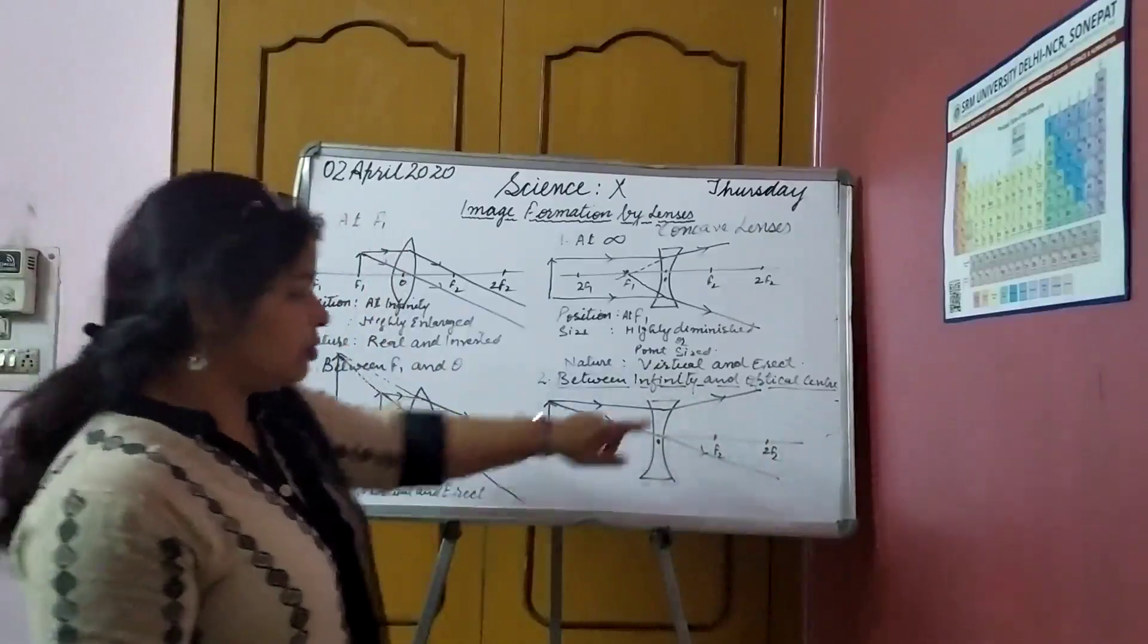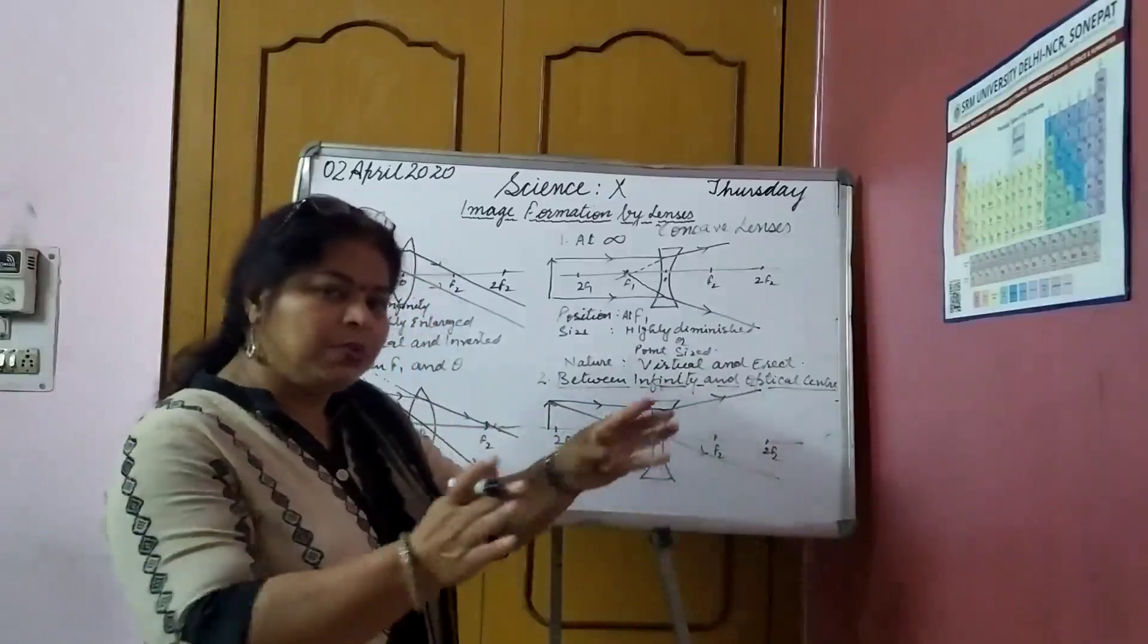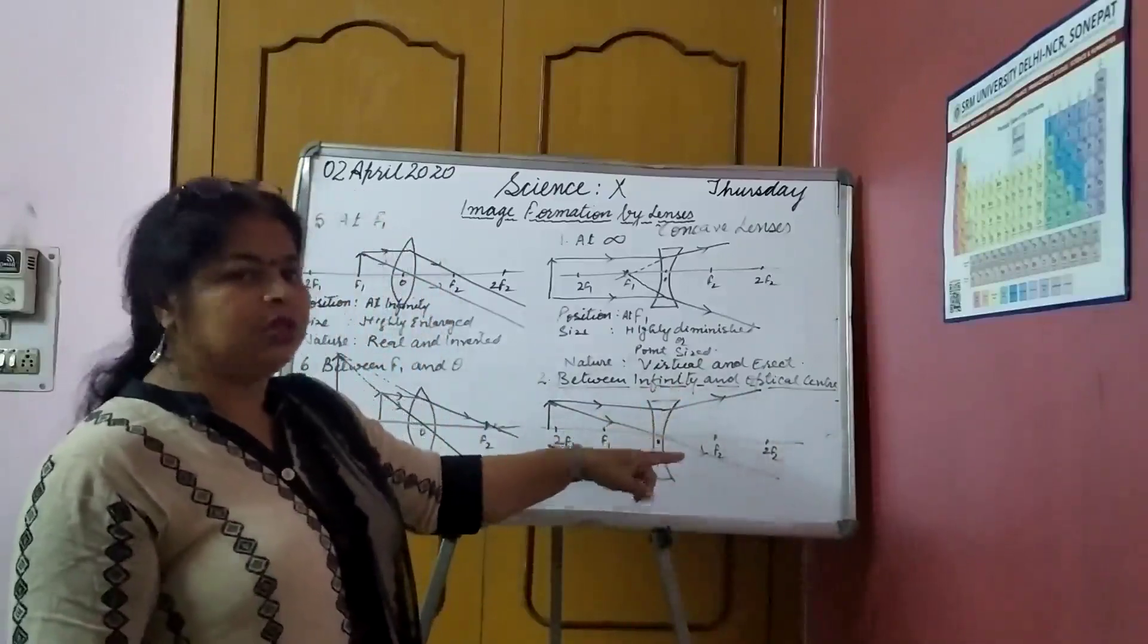So, where is the image going to form? This is going this way. This ray, through optical center, is going this way. So, they are moving apart. Where they are going to meet? Never.